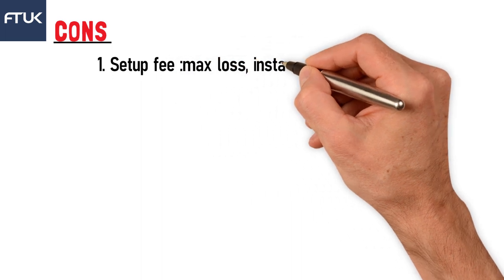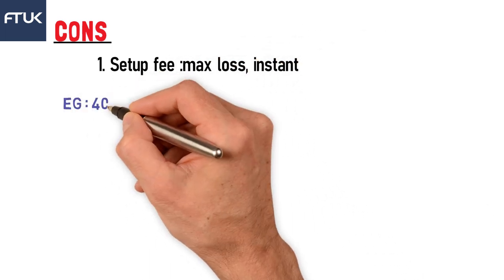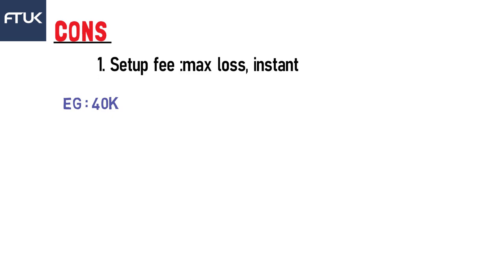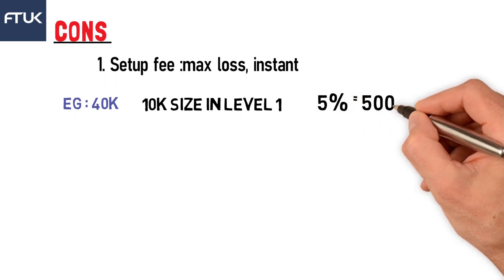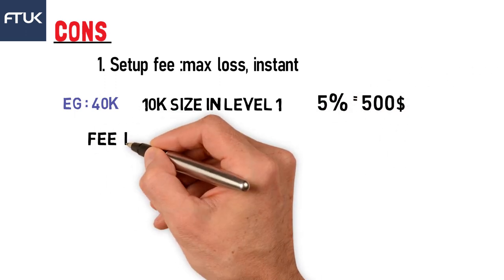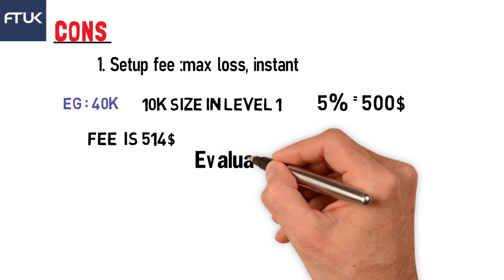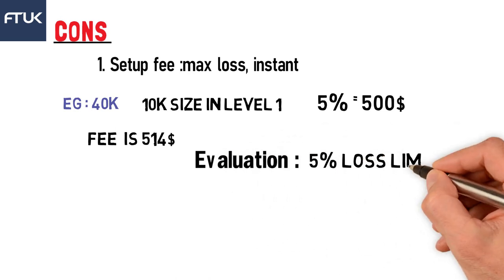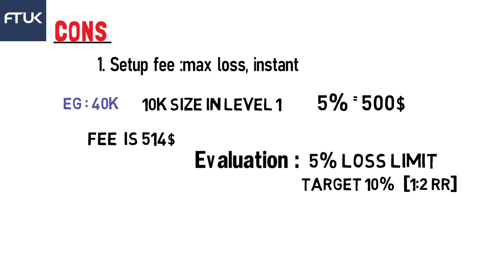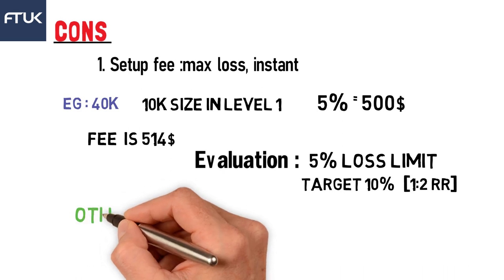Now let's look at some cons. First, the fee-to-maximum-loss ratio: for example, if you take an instant funding 40,000 Lorix account, in level one you get 10,000 with a loss limit of 5%, which equals $500. The fee you pay is approximately $514 — so they are not even allowing you to lose as much as you paid. In the Evolution model, with a 5% loss limit and 10% target, they expect a risk-to-reward of 1:2, which is quite high compared to other prop firms where it's around 1:5 or better.